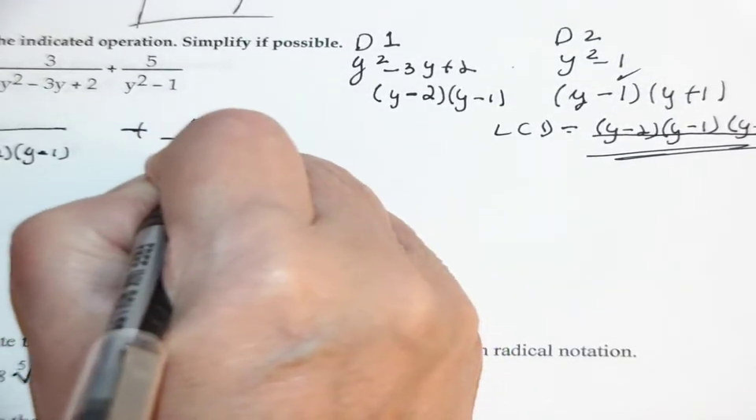So if I look at the LCD, I throw in y minus 2 and y minus 1. I have the y minus 1, but I need a y plus 1, so that's what my denominator is going to be. All of these guys have to be made into that denominator.